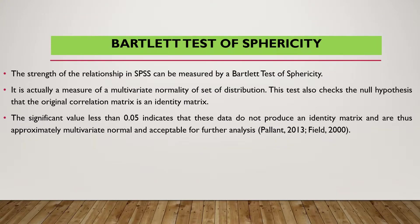For Bartlett's Test of Sphericity, the main objective is to measure the multivariate normality of the set distribution. This test checks the null hypothesis that the original correlation matrix is an identity matrix. A significant value less than 0.05 indicates that the data do not produce an identity matrix and are thus approximately multivariate normal and acceptable for further analysis, based on Pallant 2013 and Field 2000.